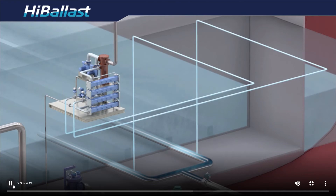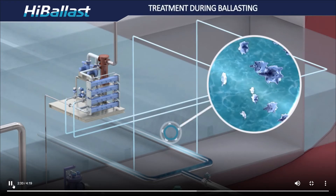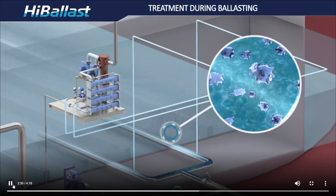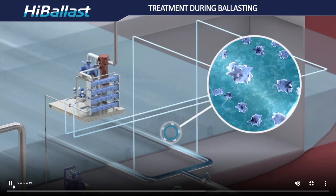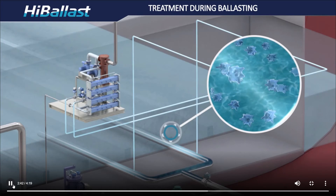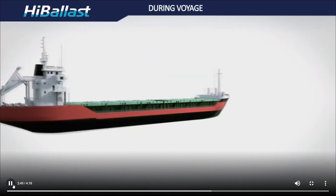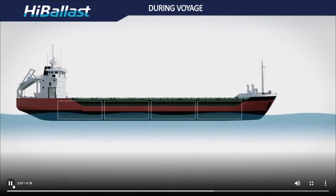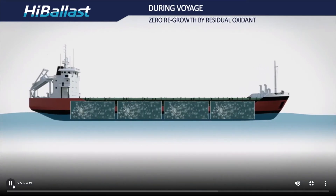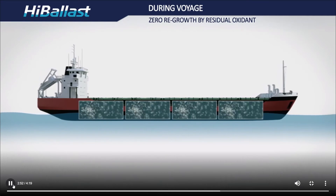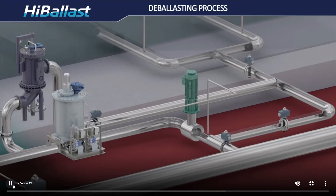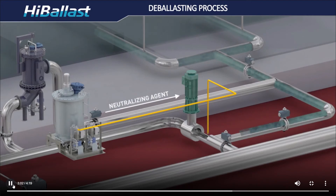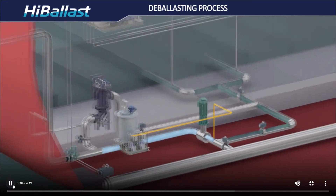Hypochlorite is a proven disinfectant which is generally used in the food and water industry. It kills microorganisms in ballast water in a short time. Though residual oxidant dissipates in the tank over time, it continues working during the voyage and inhibits the regeneration of microorganisms. In case of deballasting, thanks to the residual disinfectant, additional disinfection of the ballast water is not needed.